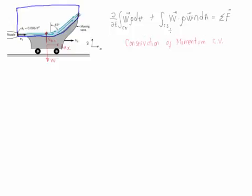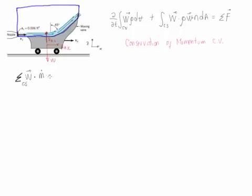Now we're going to use the momentum expression and simplify it based on the information we have. The first term is neglected because the problem is steady. For the second component, we evaluate whether the relative velocity is constant at both control surfaces by checking the fluid and control volume velocities at the entrance and exit. Since the fluid velocity and control volume speed are both constant, the relative velocity at entrance equals that at exit. We can simplify the integral as the summation of relative velocities times mass flow rates at each control surface, equal to the summation of all forces.